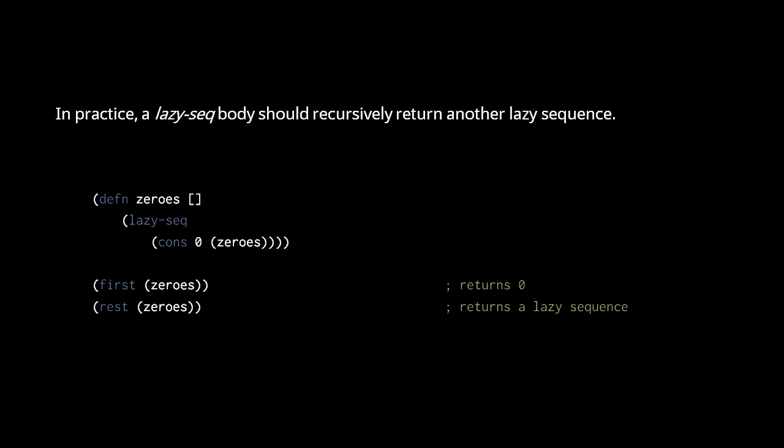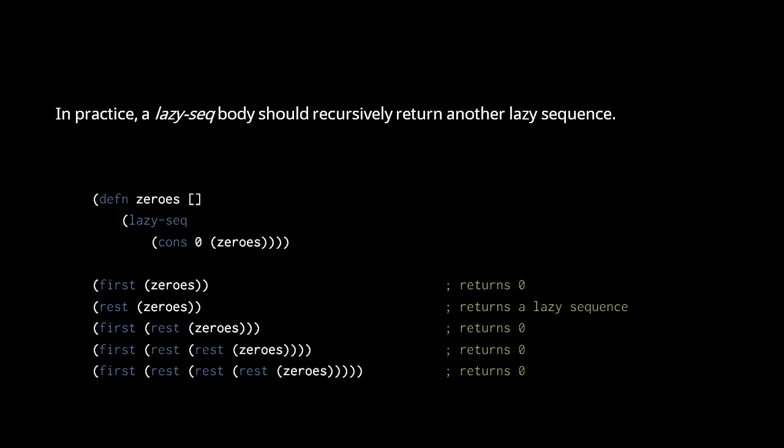Because the sequence referenced by the cons is itself a lazySeq the same as our original, calling first after rest will return 0 as well. In fact, calling first after any number of rest calls will always return 0. Hence, the lazySeq returned by zeros is an infinite sequence of zeros.